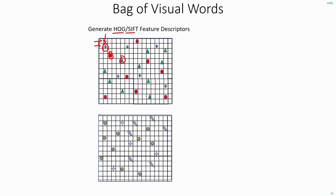You repeat the same step even for this second image. Here, you are able to extract stars, lightnings and blasts. These are the features that you managed to extract. Once you have extracted the features, you need to create the codebook. This is the same technique that we used to create the histogram bins.